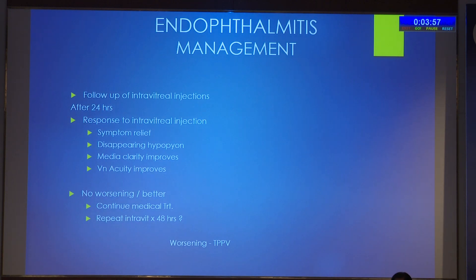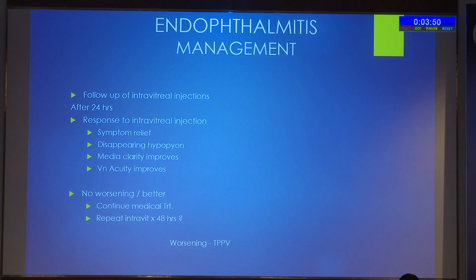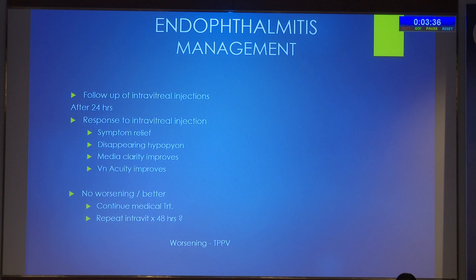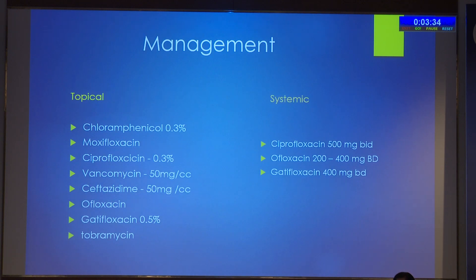Within 24 hours of the injection, we should see the response: improving media clarity, disappearing hypopyon, and improving vision. If improving, we wait for the culture report and continue the same medication. After 48 hours, we repeat the intravitreal antibiotics depending upon culture sensitivity and type of organism. If the condition is worsening, we take the patient for core vitrectomy.